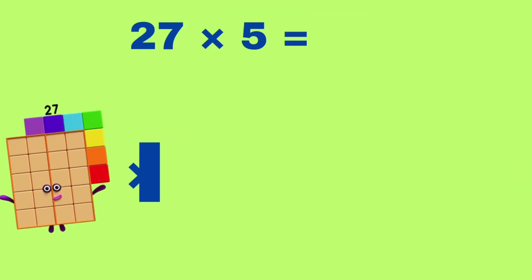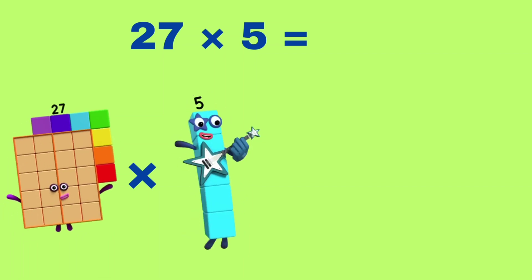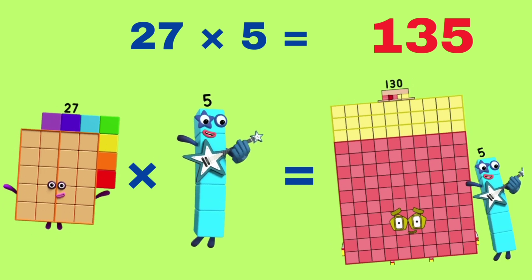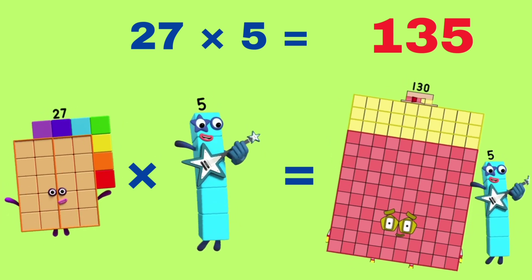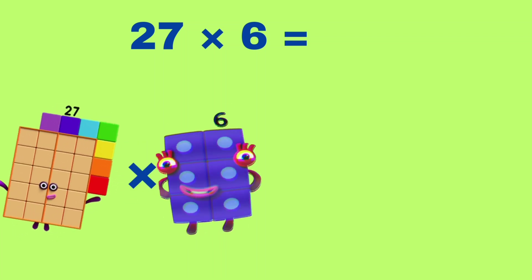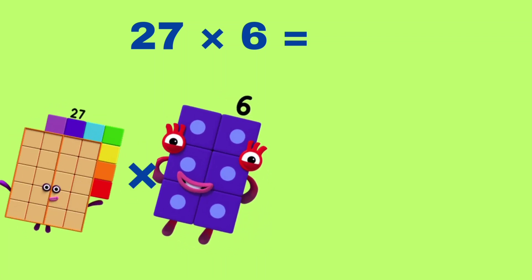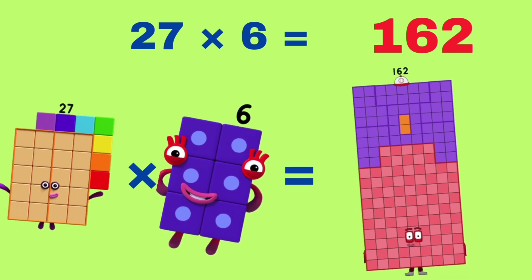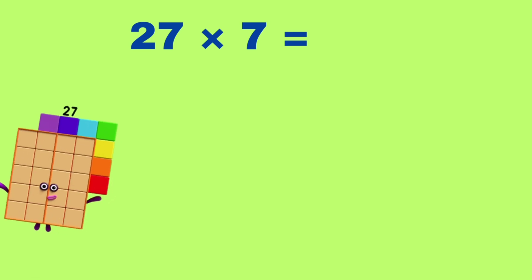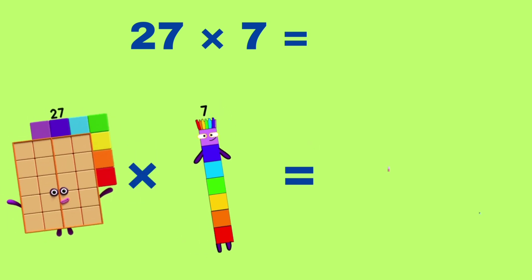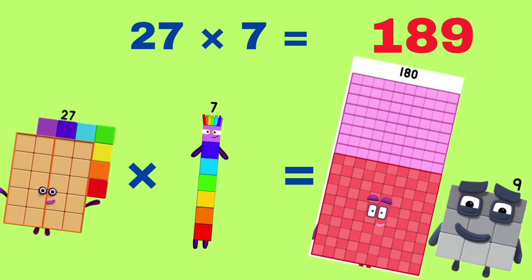27 multiplied by 5 is equals to 135. 135. 27 multiplied by 6 is equals to 162. 162.